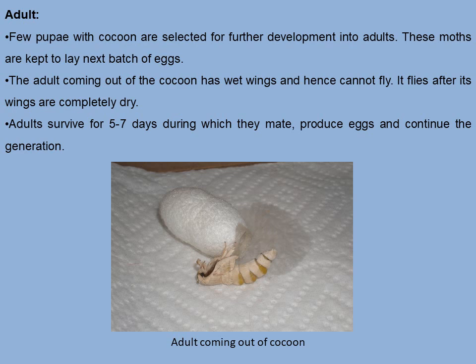From the cocoon emerges the adult. A few pupae with cocoons are selected for further development into adults for sericulture purposes — these moths are kept to lay the next batch of eggs. The adult coming out of the cocoon has wet wings and hence cannot fly immediately; it flies after its wings are completely dry. Adults survive for five to seven days, during which they may produce eggs and continue the generation.